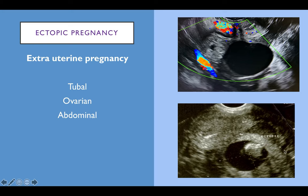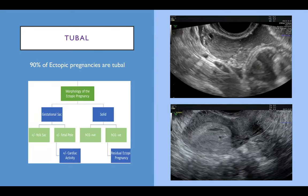Abdominal pregnancies can be primary or secondary ectopic pregnancies. A primary is when the ectopic pregnancy implants in the abdominal cavity. Secondary can occur after rupture from a tube and then implantation within the abdominal cavity, or if it ruptured from a uterine anomaly such as a rudimentary horn in a unicornuate uterus. However, the most common form — 90% of ectopic pregnancies — are tubal.